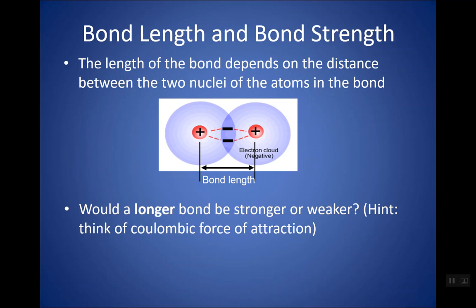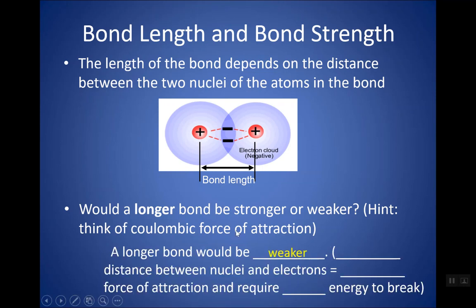Bond length is the distance between the two nuclei in a bond. A longer bond would be weaker, because a bond is a force of attraction between positive nuclei and electrons — like Coulombic force of attraction. If you increase the distance, you have less force of attraction, so that's a weaker bond requiring less energy to break. Anything that makes a bond longer makes it weaker; anything that makes a bond shorter makes it stronger.